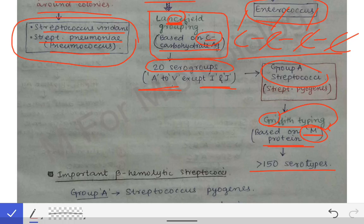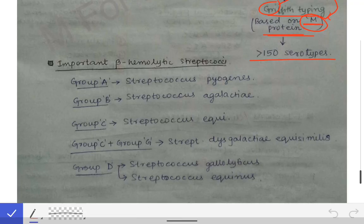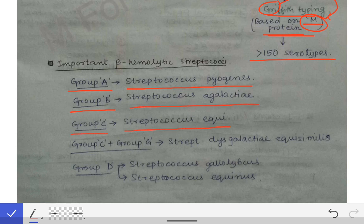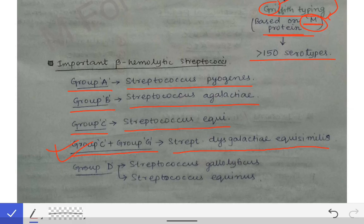This is the whole classification of the streptococci. Next, the important beta hemolytic streptococci — it is important to at least know the names. Group A streptococci is Streptococcus pyogenes. Group B is Streptococcus agalactiae. Group C is Streptococcus equi, while group C plus group G is Streptococcus dysgalactiae equi similis — it carries both C and G group antigens, which may be asked in MCQs.